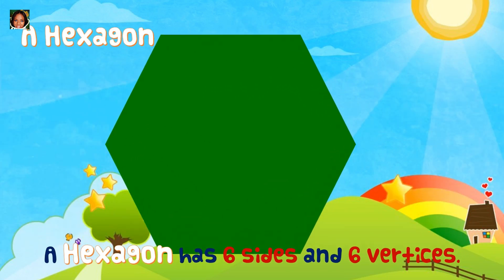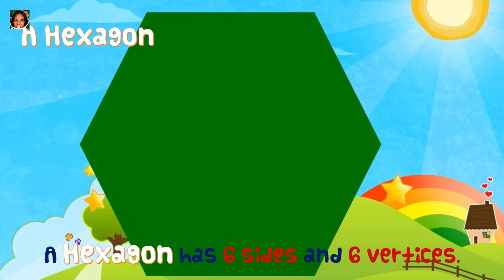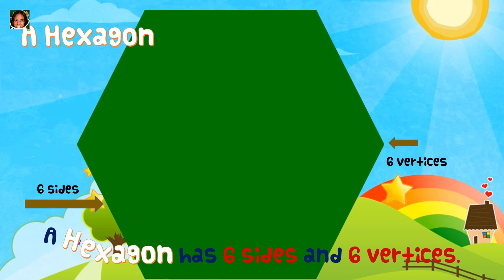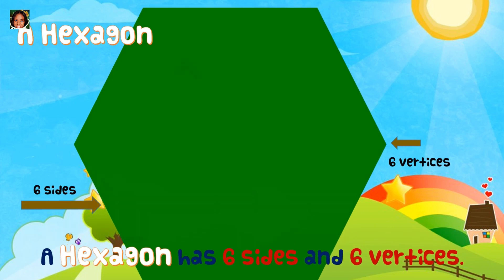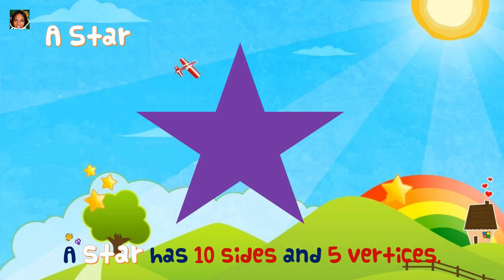Hexagon. A hexagon has six sides and six vertices.